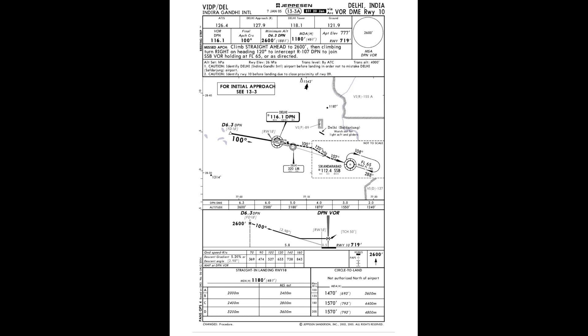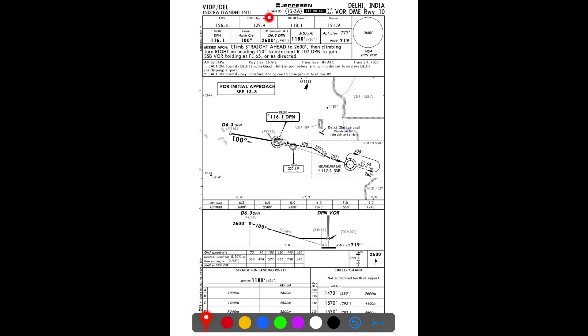As promised, here is a second Jeppesen chart — Delhi VOR/DME Runway 10 — showing the effective date. The effective date is 20th January 2005, and the publication date is 7th January 2005. The effective date is more important to the pilot. During the chart briefing, both crew members confirm they have the same chart by checking that the effective date and index number match.